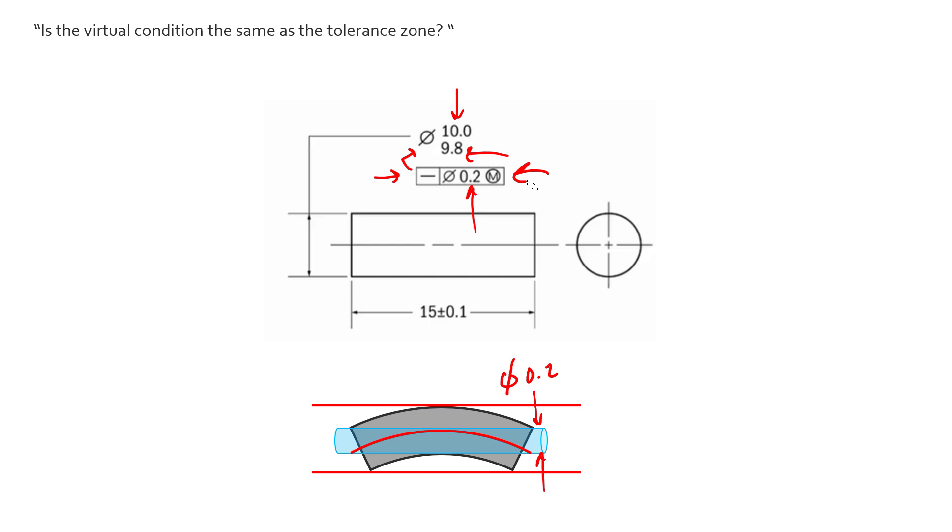We also have to make sure any two-point measurement of this feature is inside our two limits of size. Since we're using straightness on a feature of size, we're overriding rule number one, so we no longer have to check that envelope according to rule number one. We do control form using straightness and this tolerance zone here.